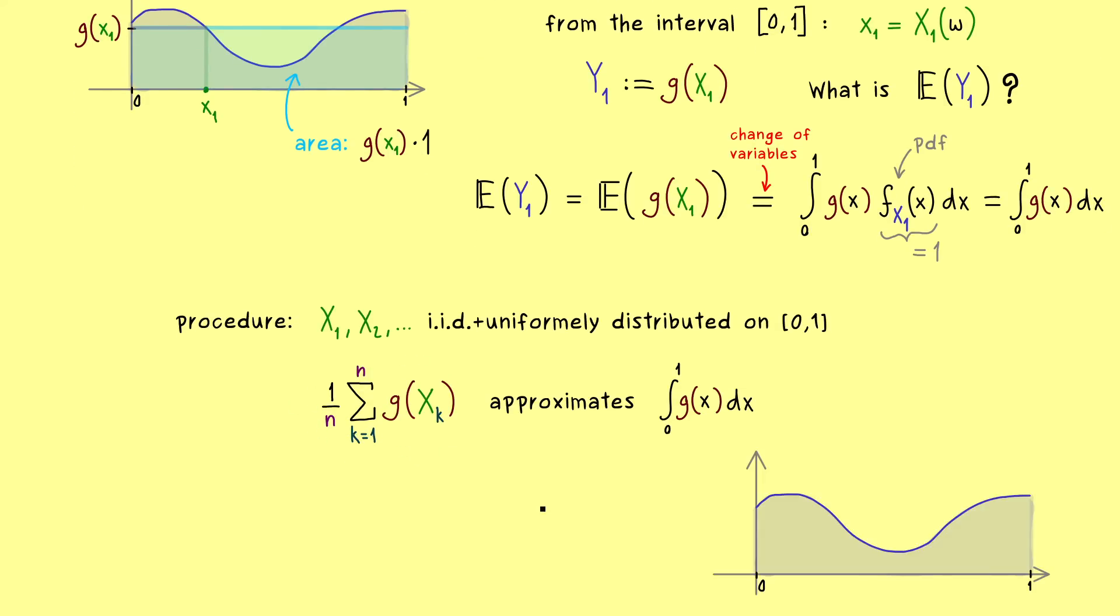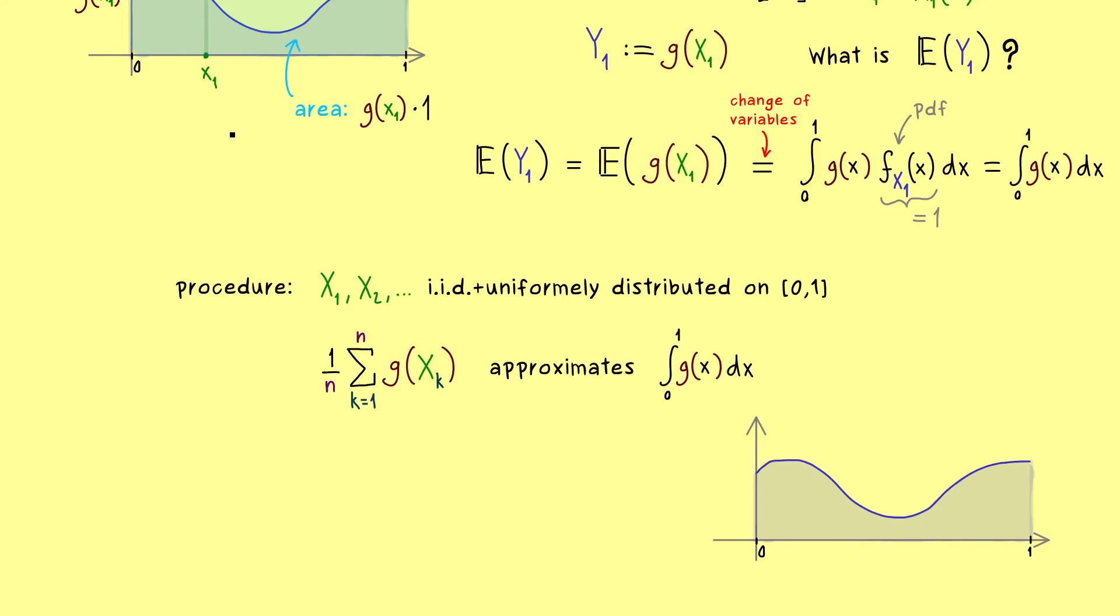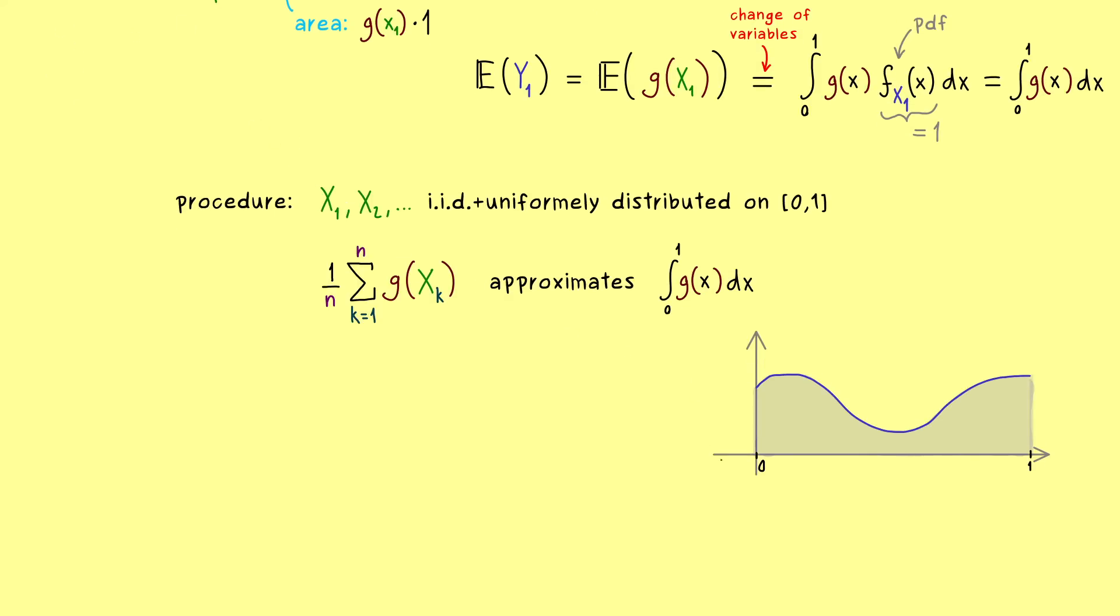Because then the rectangles we draw here will also be smaller. So for example, if we consider three random points here, here and there, then we are only interested in the corresponding values of the function.